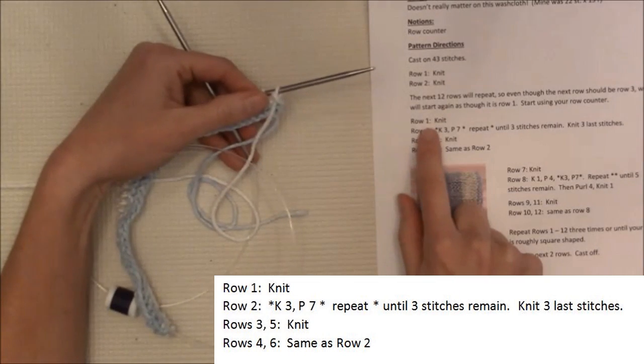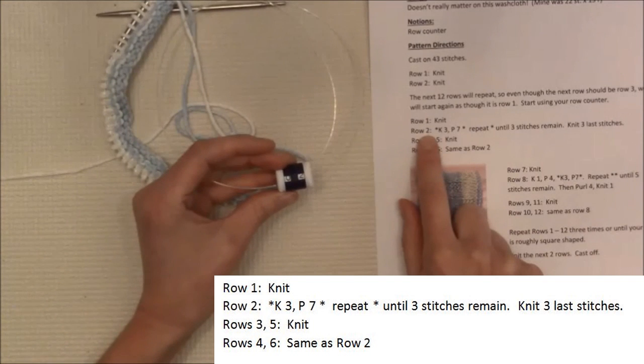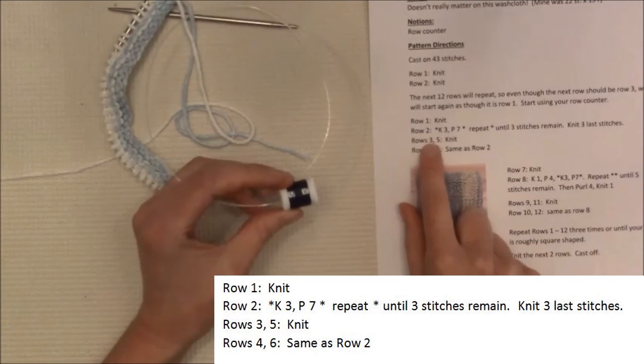Okay, you have now done row one, row two. You've marked it on your row counters. So the next one would be row three.